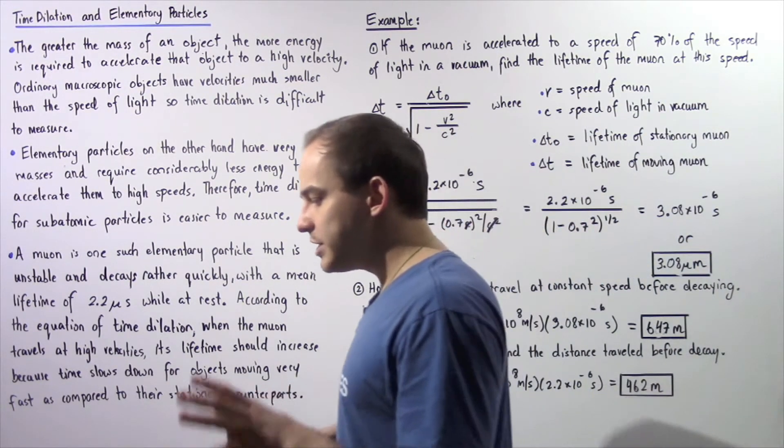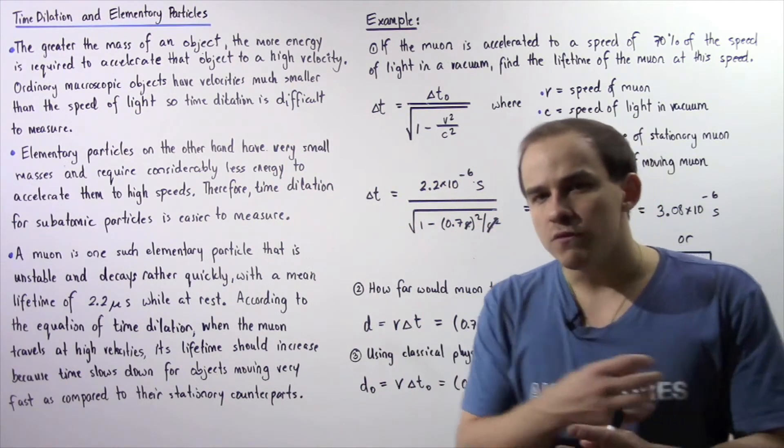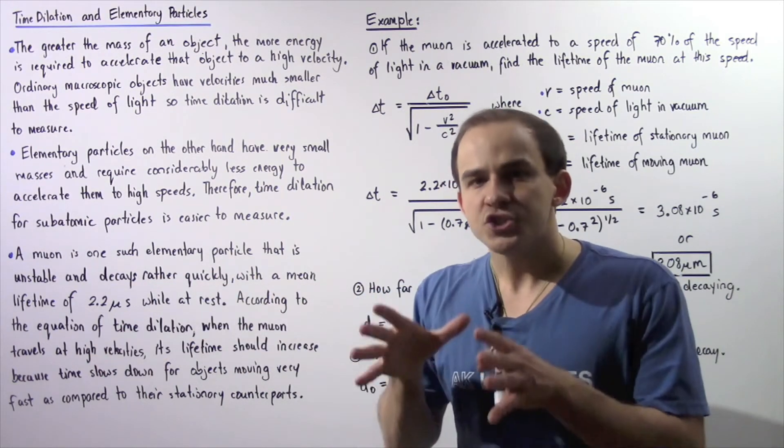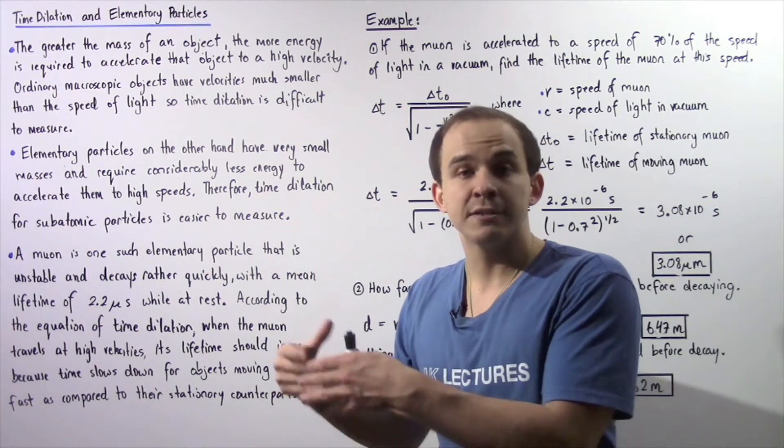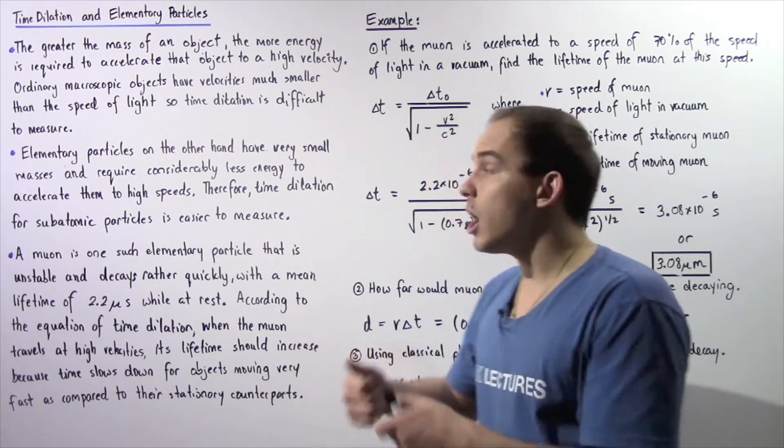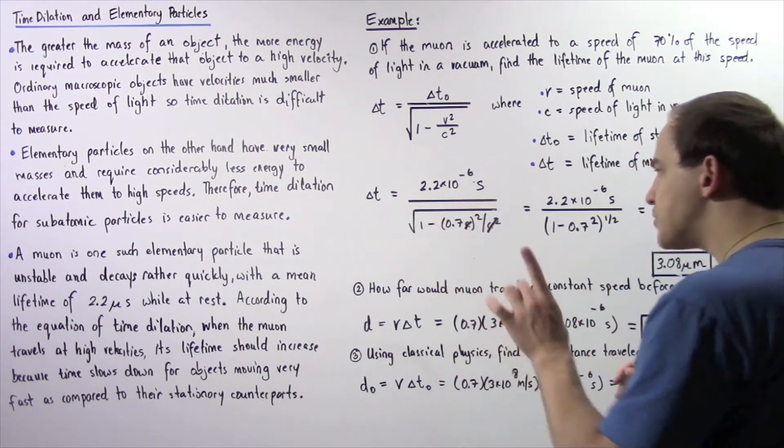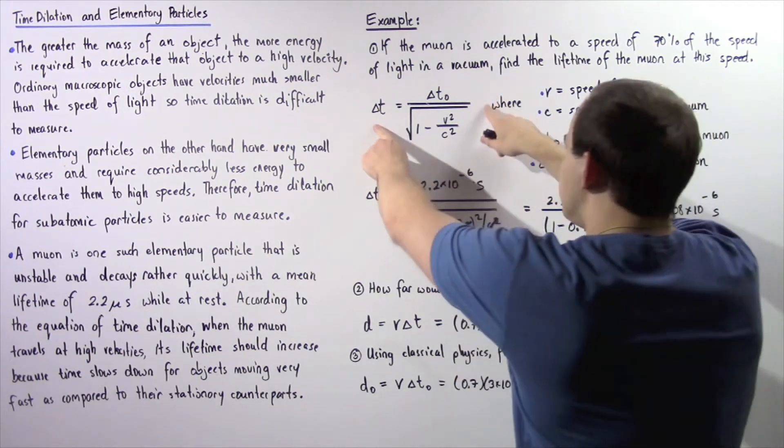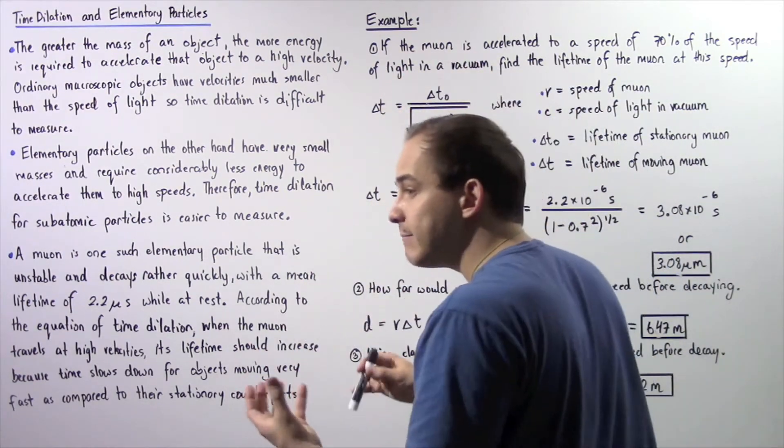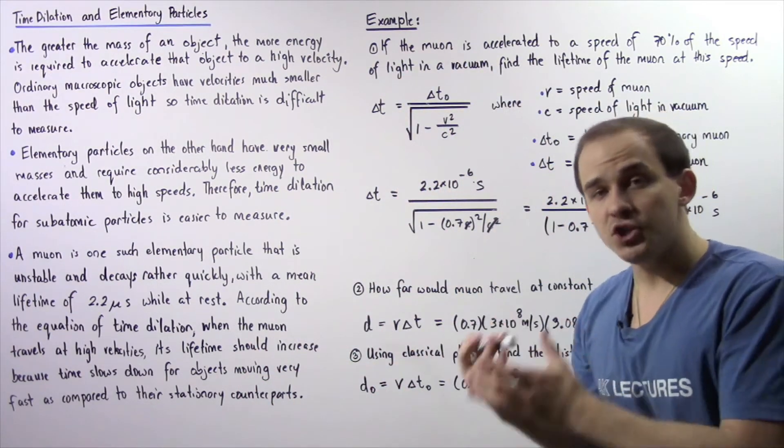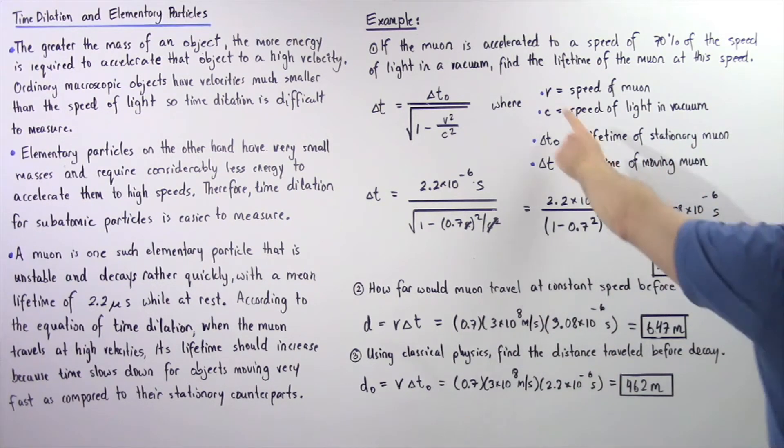Remember, the time dilation equation tells us that time for an object that is moving very quickly will slow down compared to the stationary counterpart. And that means the lifetime of this muon should increase. So let's make sure that's actually correct by looking at this equation. So delta t is the time or the lifetime of our muon when that muon is moving with the velocity v.